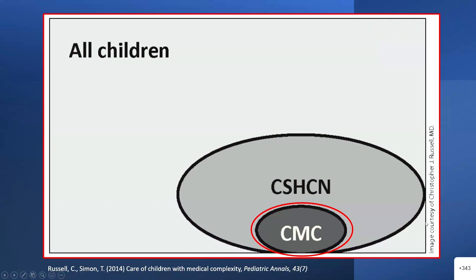If we have all children in this square, within that are children with special healthcare needs — many different examples, like a child who has NG feeds, maybe for something like dysphagia. You could say that's a child with special healthcare needs versus a child with medical complexity. Two or more systems affected, medically fragile, at risk of hospitalization — all of those things would put you into that category instead.